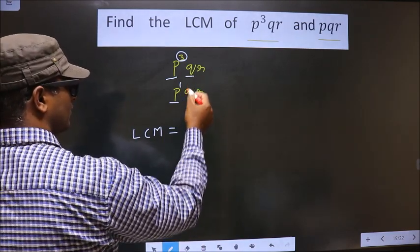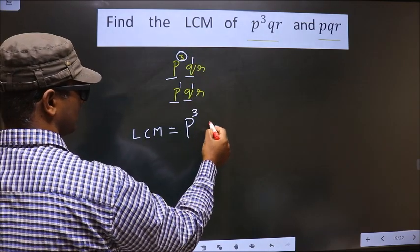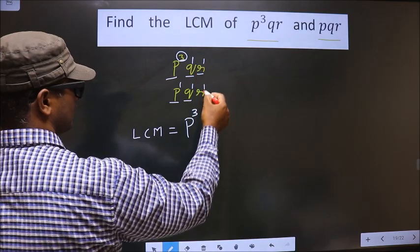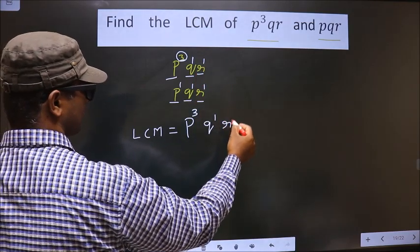Next letter is Q, here also Q, both the powers are 1. So here also you get Q¹. Next letter is R¹, here also R¹. So here also R¹.